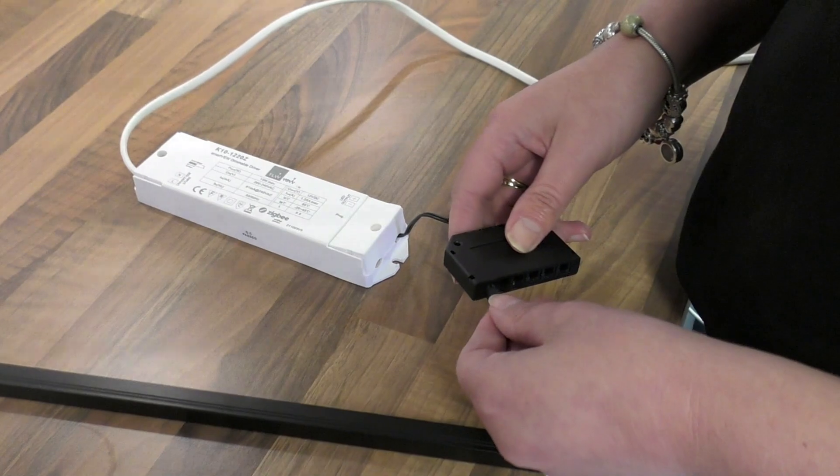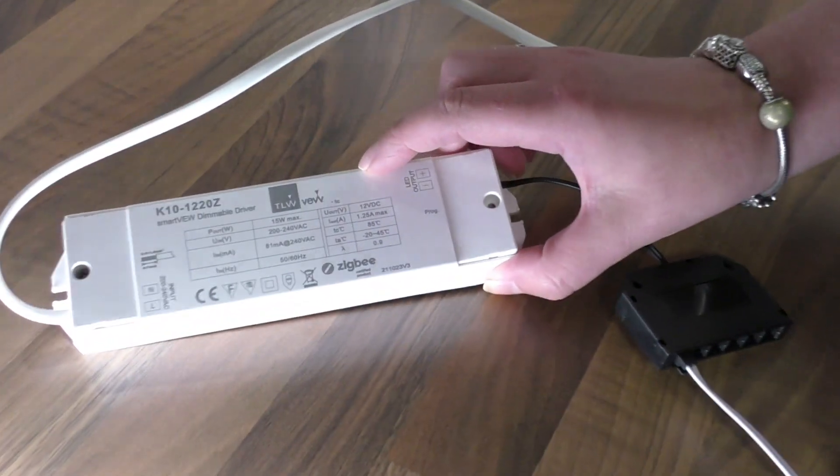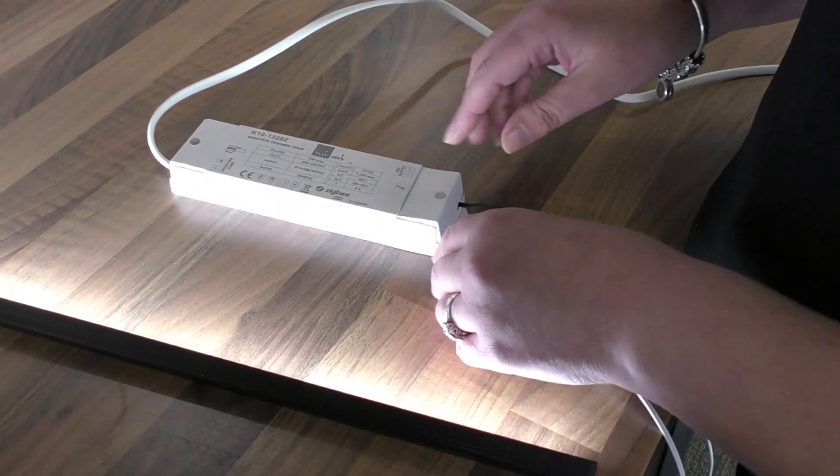You plug your lighting to your Zigbee driver. This is very similar to the receiver and the uni driver but only works with single color.